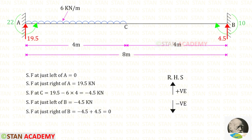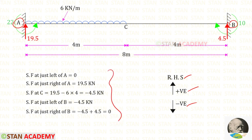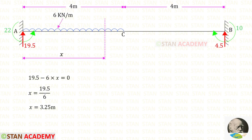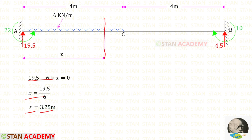Now we can draw the shear force diagram. I am going to find the shear force values from point A towards point B, following the right-hand side rule: upwards is positive and downwards is negative. I have calculated the shear force values and the shear force diagram is shown. At one particular point the shear force becomes 0. I have made a section at distance x from point A, and since the shear force is 0 at that point, solving gives x = 3.25 meters.